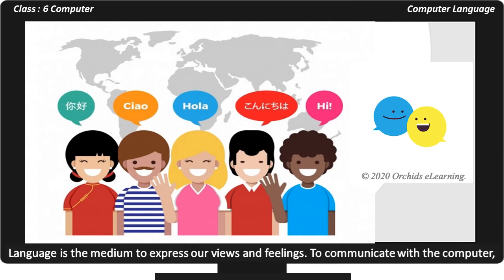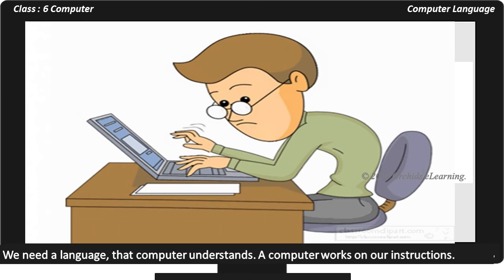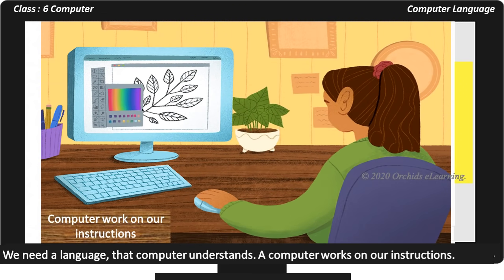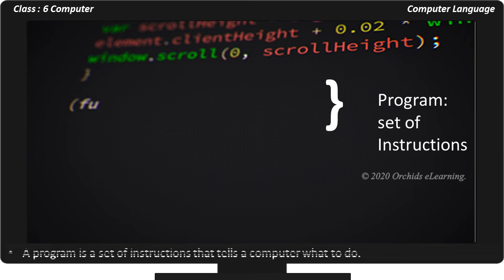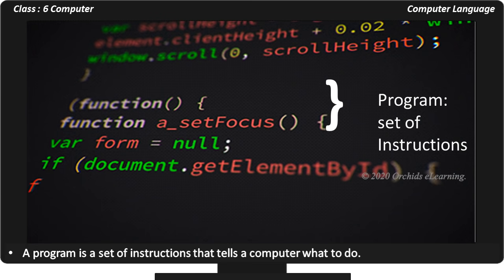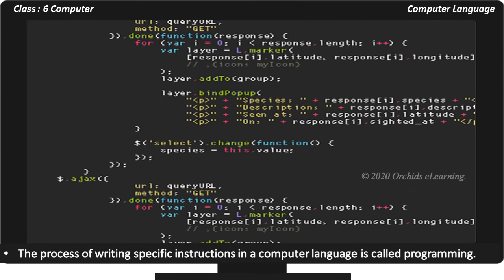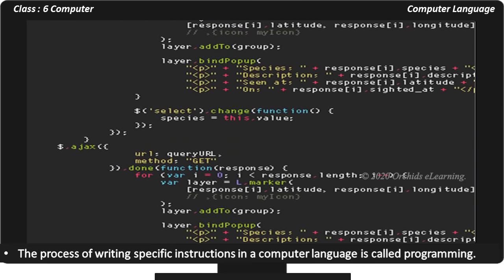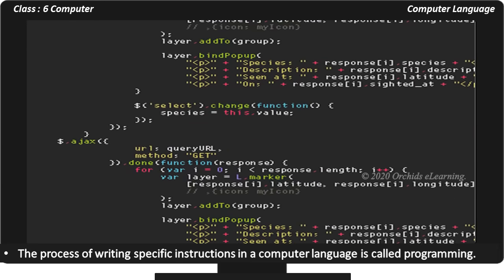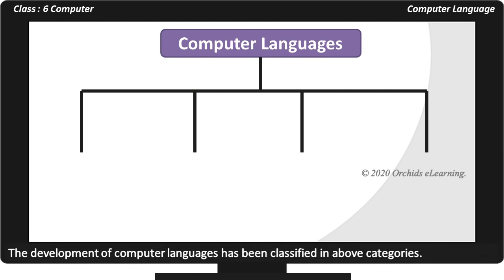Language is the medium to express our views and feelings. To communicate with the computer, we need a language that the computer understands. For every action, a computer has to be given instructions accordingly. A program is a set of instructions that tells a computer what to do. The process of writing specific instructions in a computer language is called programming. Each programming language has its own specific rules. The development of computer languages has been classified in the above categories.